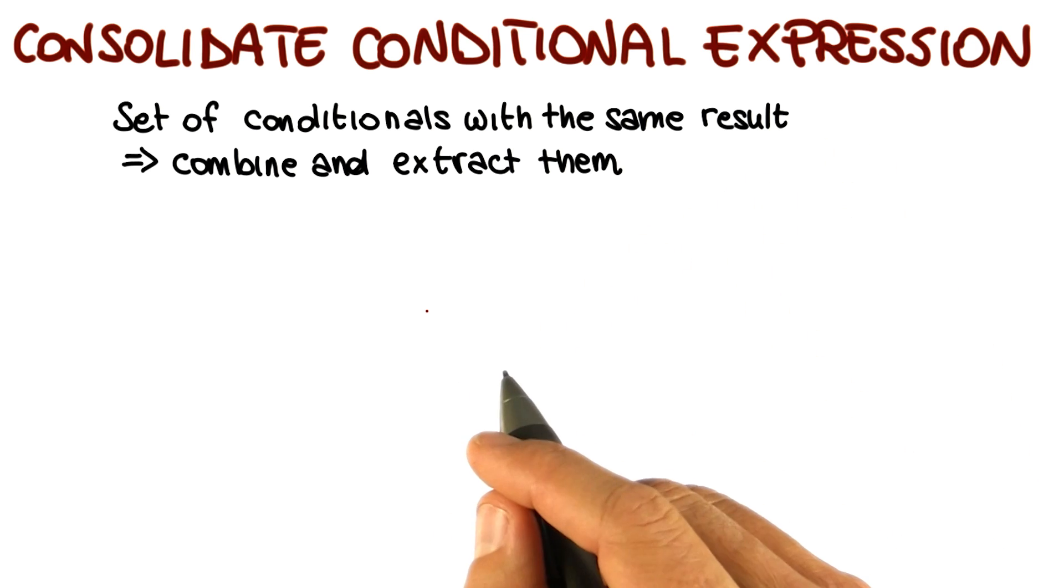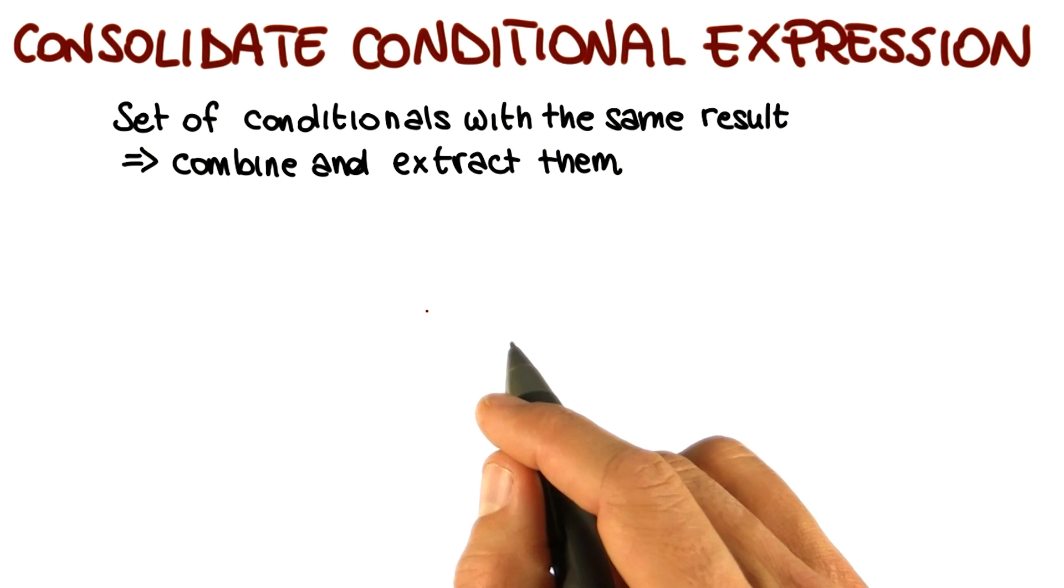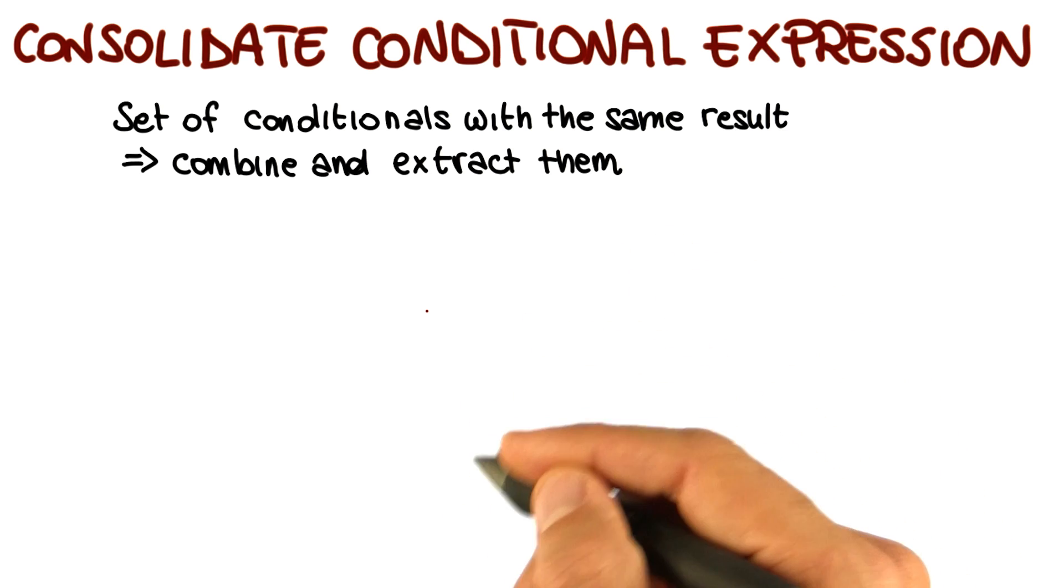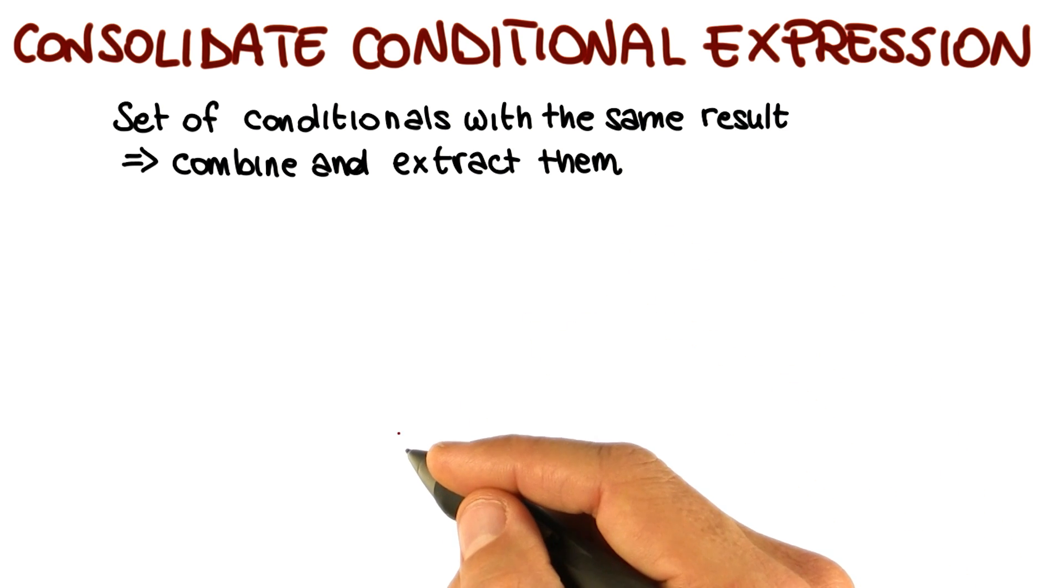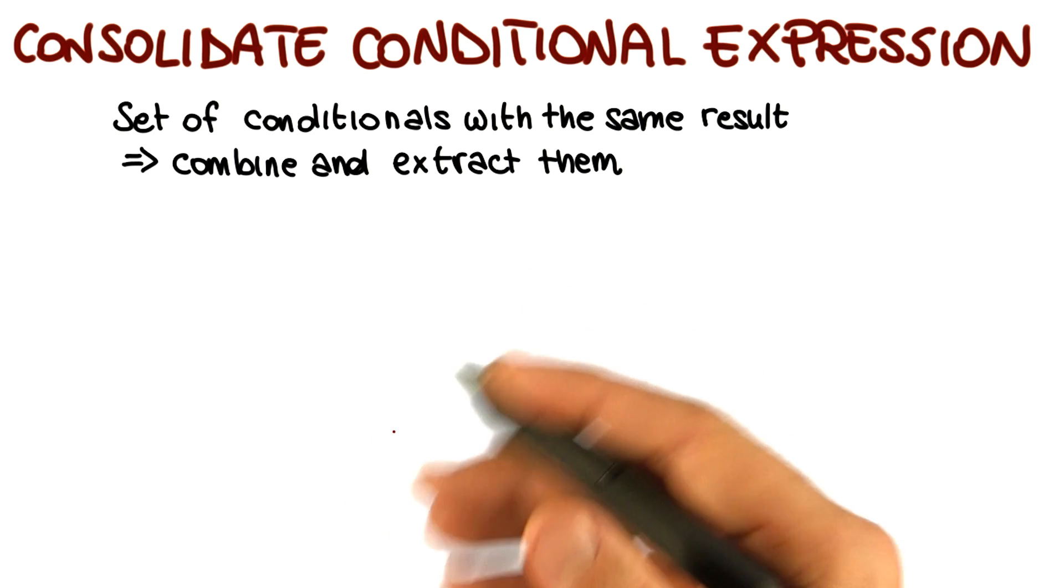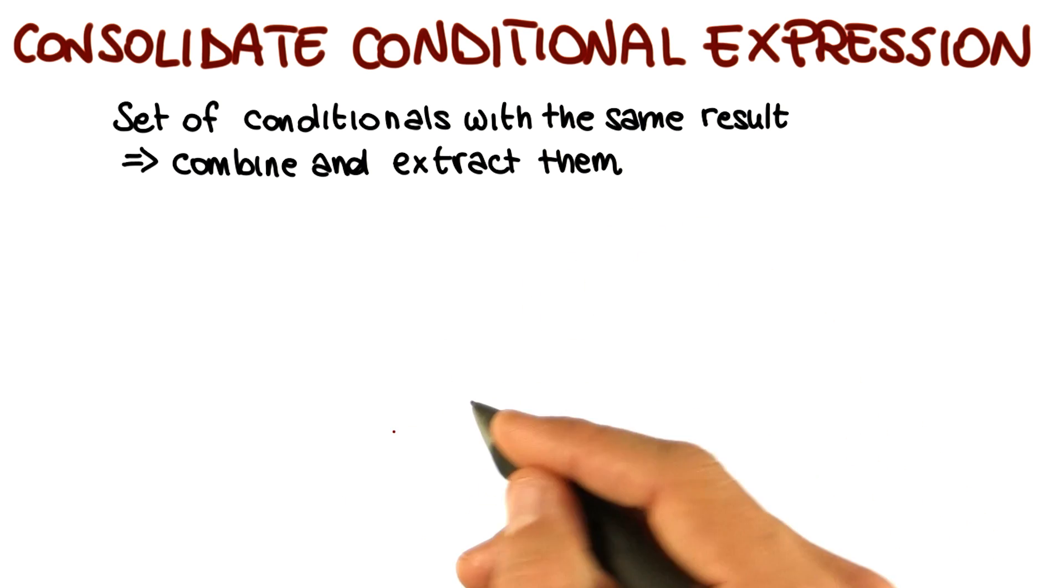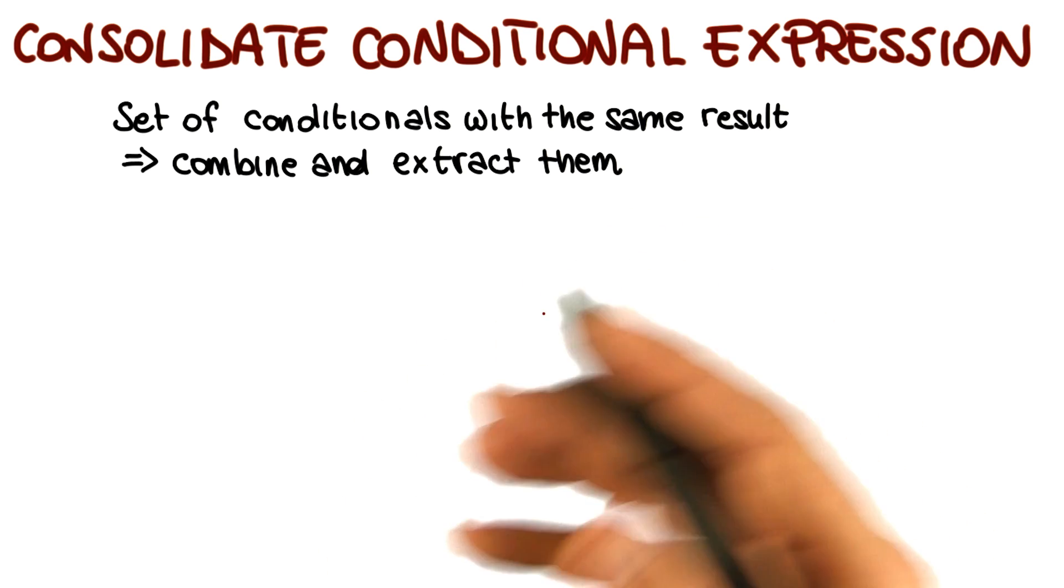Consolidating the conditional code in this way can make the checks clearer by showing that you're really making a single check rather than multiple checks. And extracting that condition and having a method instead of a condition can clarify your code by explaining why you're doing a given check, rather than how you're doing it.